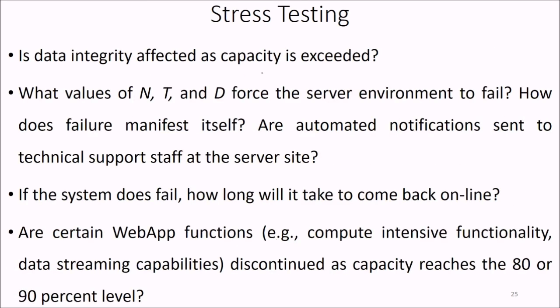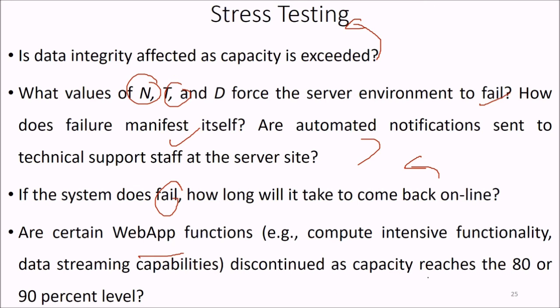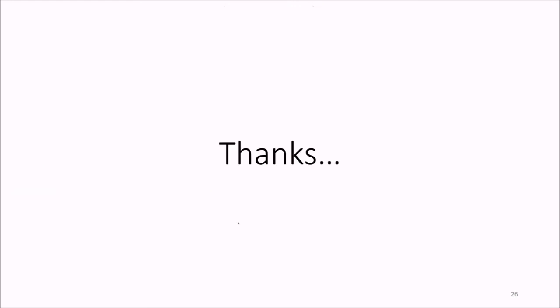Further stress testing questions: Is data integrity affected as capacity is exceeded? What values of N, T, and D cause the server environment to fail? How does failure manifest itself? Are automated notifications sent to technical support staff? If the system fails, how long will it take to come back online? Are certain computationally intensive functions or data streaming capabilities discontinued as capacity reaches 80 to 90% level? This concludes the topic of testing web applications, which has certain additional aspects compared to conventional, object-oriented, and traditional software testing.